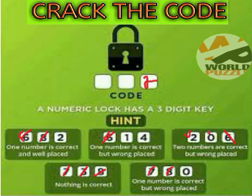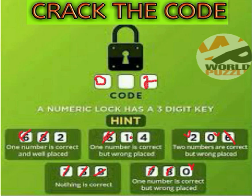Zero is the right number but is in the wrong place according to this clue. From the fifth clue, the third code position has zero, and the second code position also shows zero. So we can write down that the first code digit is zero. Zero is confirmed as correct here.